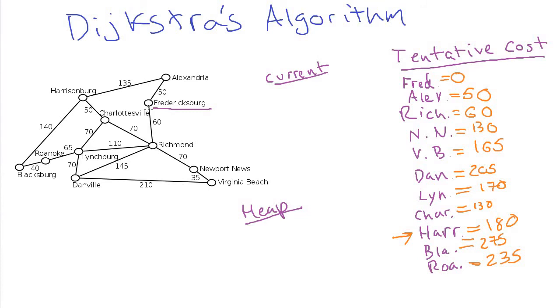Dijkstra's algorithm is a really widely-used algorithm. It's named after Edsger Dijkstra, a renowned Dutch computer scientist. Now let's talk about the big-O analysis for this algorithm.